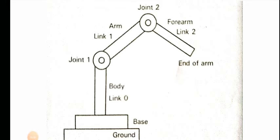Good morning friends. Today we are going to discuss robot anatomy. Before we start, we should know what robotics means. Robotics is a branch of technology that deals with the concepts, design, construction, operations, and application of robots. A robot is nothing but a machine designed to execute one or more tasks repeatedly with speed and precision.